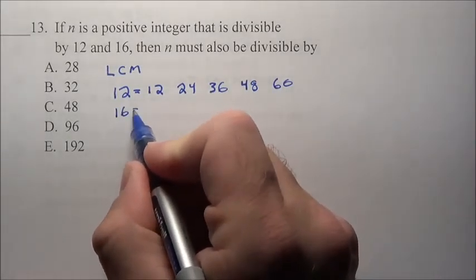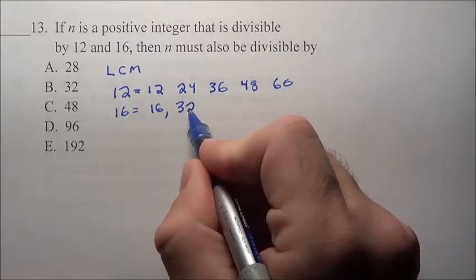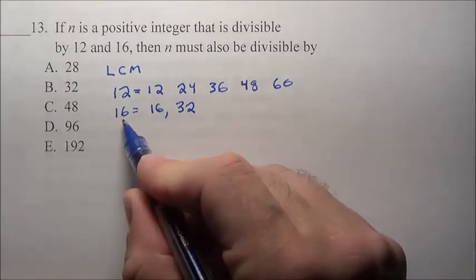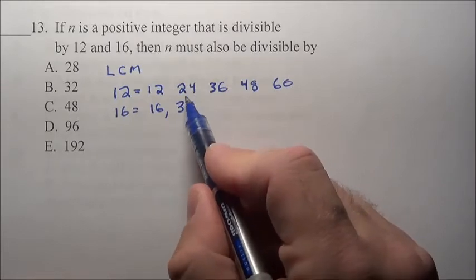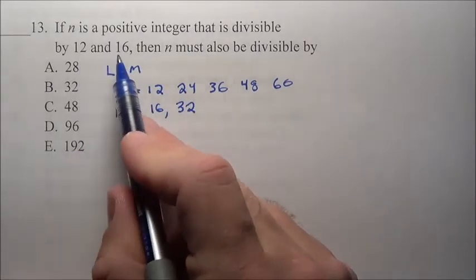Let's look at 16, 16 times 1 is 16, see 16 can be divided by 16, 16 times 2 is 32, so 32 can be divided by 16. We're looking for a common number that obviously can be divided by both 12 and 16.